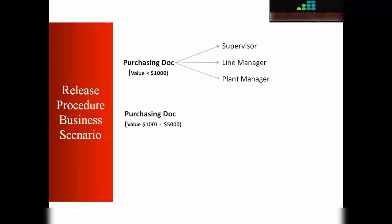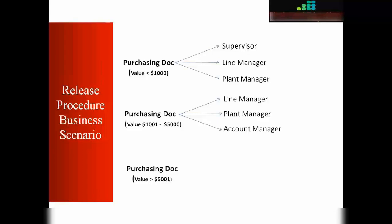If the purchase order value is between one thousand and five thousand dollars, the same three-step approval applies, but because of the higher cost, the first approver should be the line manager, second the plant manager, and third the account manager. Finally, if any purchasing document value is greater than four thousand dollars, it should be approved first by the plant manager, then the account manager, and finally by the director of the company.